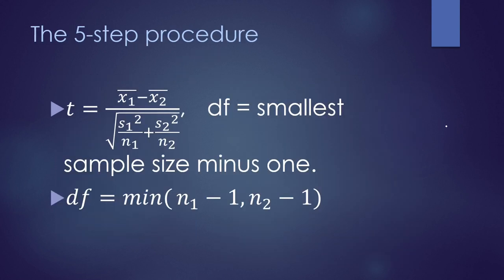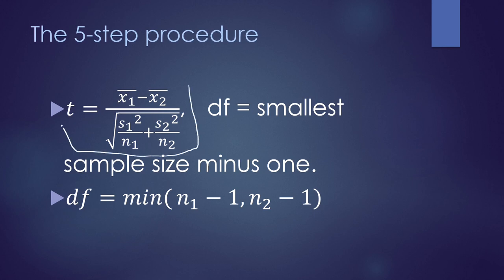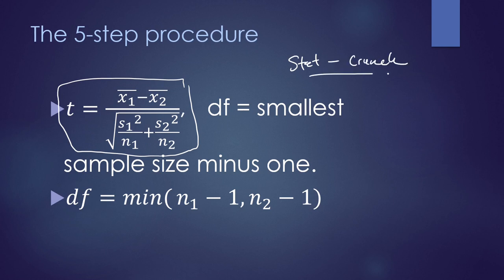The five-step process is exactly the same as earlier. Here is the formula to calculate the test statistic: T equals x-bar of the first group minus x-bar of the second group, divided by the square root of the standard deviation of the first group squared over n1 plus the standard deviation of the second group squared over n2. In our class we're not going to do any calculations by hand — everything from now on will be done on StatCrunch. We're just presenting the formula if you want to do it by hand.